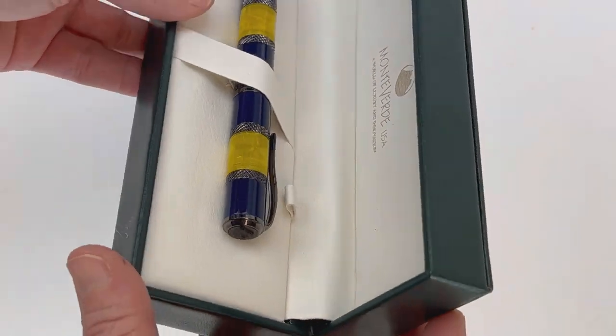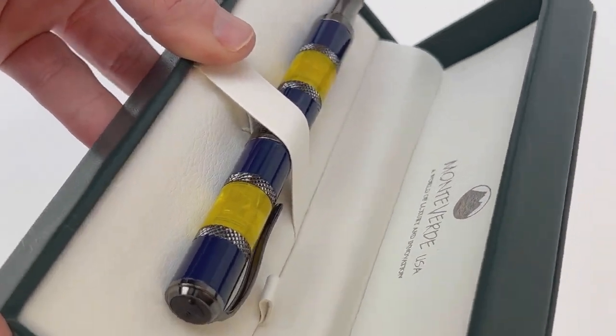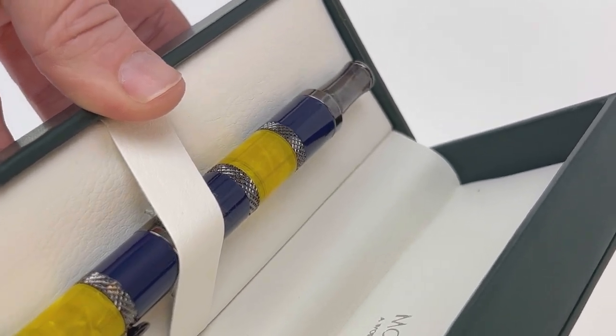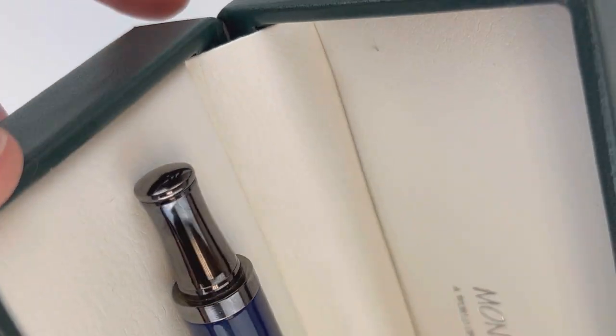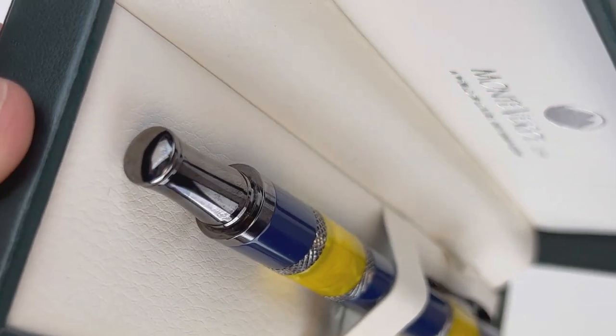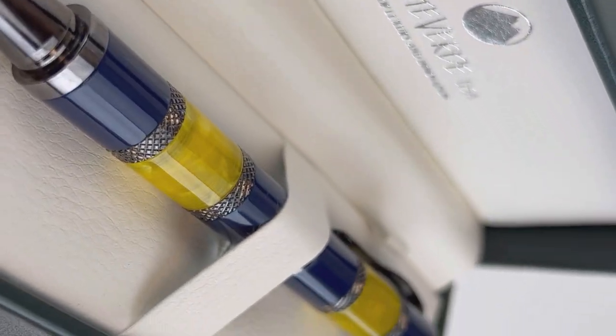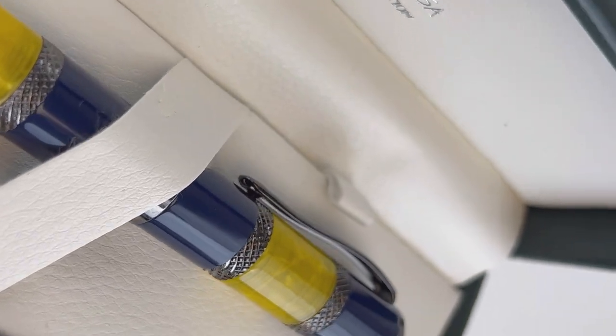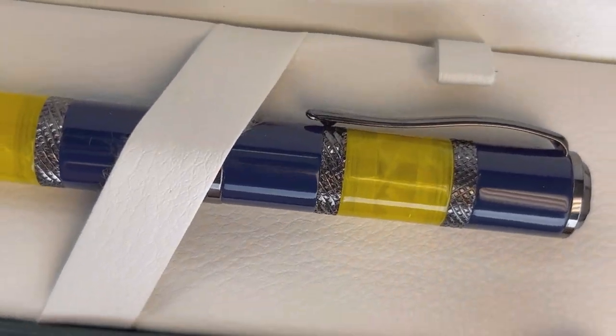This is the blue and yellow with gunmetal trim. The Regatta pens do come packaged in the Monteverdi classic green box with the cream-colored interior with the Monteverdi logo on the outside and on the inside of that box top. Your pens are safely secured by the strap that goes over the pen.